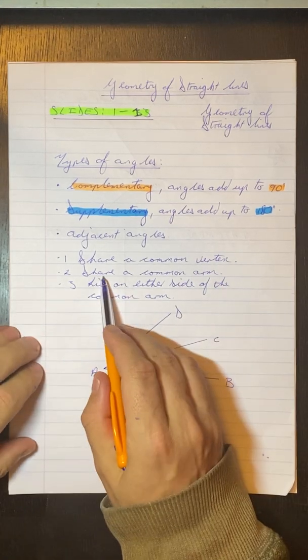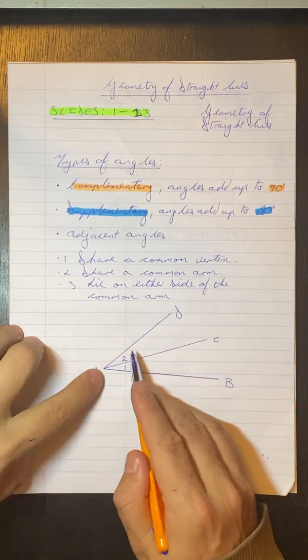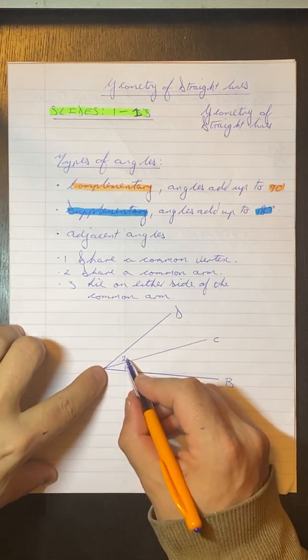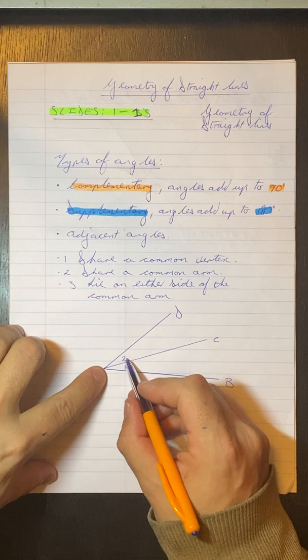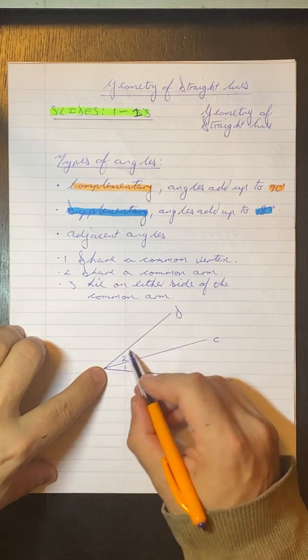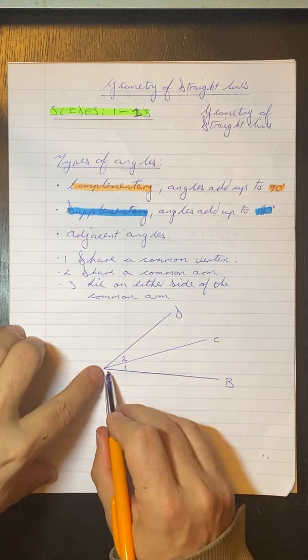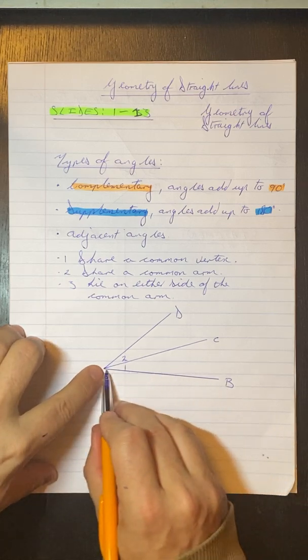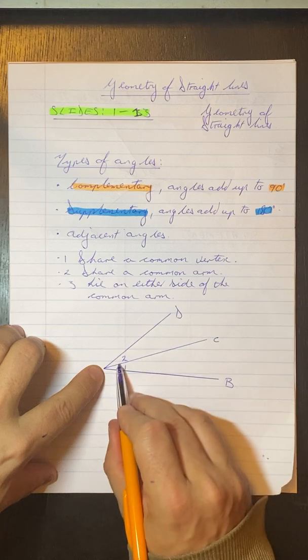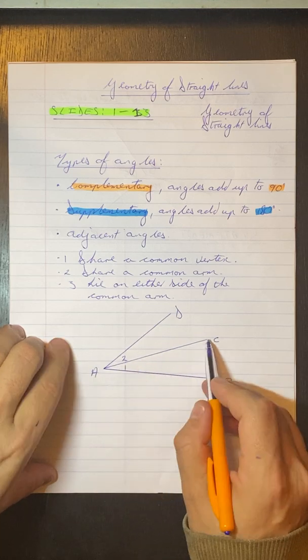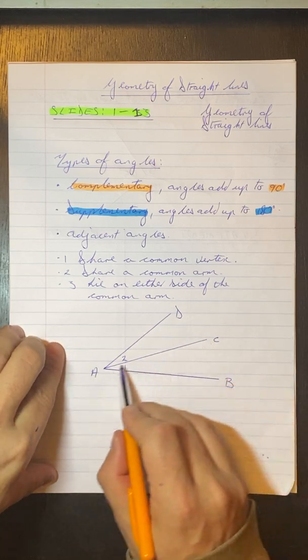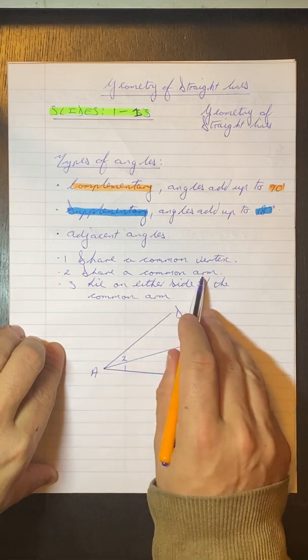They also share a common arm. So if we have a look at angle A2, the two arms that belong to A2 are this arm here and this arm over here. Then if we look at angle A1, it has an arm over here and an arm over here. And you can see that A1 and A2 share this common arm AC. So that's that bit over there.